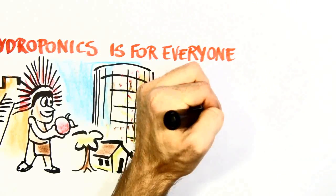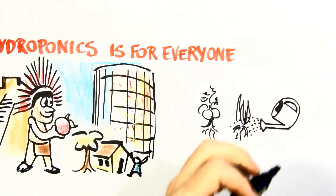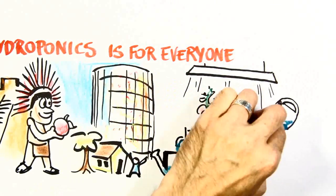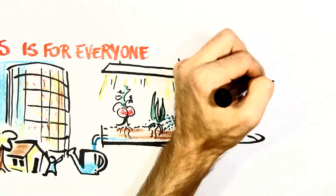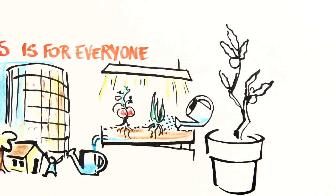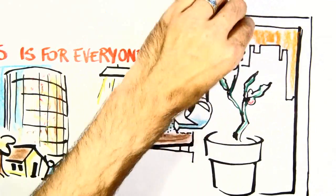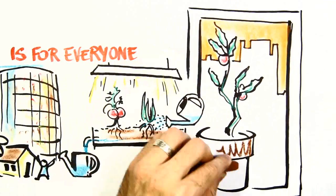A hydroponic system typically includes the plants, the nutrient-filled water, reservoirs for draining and feeding, and in some cases, grow lights. The hydroponic system can be as simple as one plant in a cup of water on your kitchen windowsill, or as elaborate as a large-scale commercially operated facility.